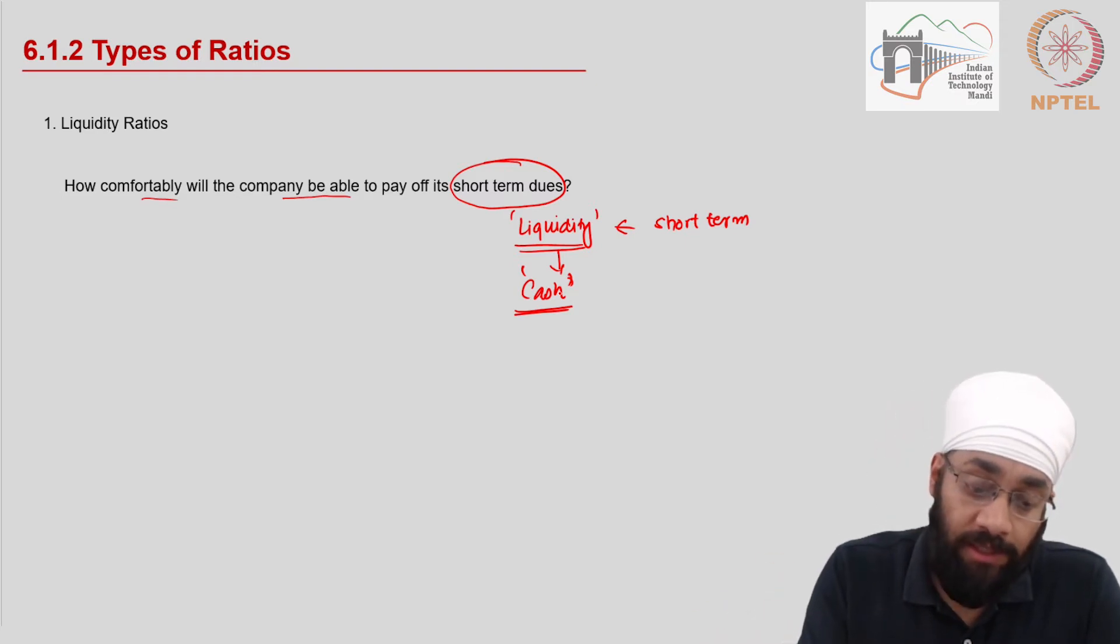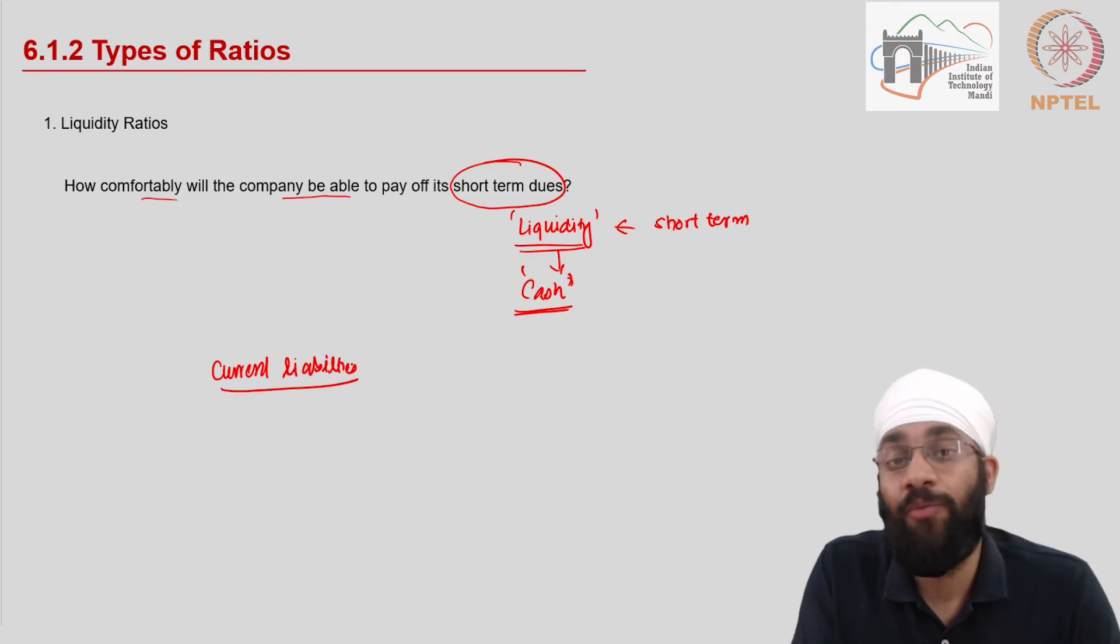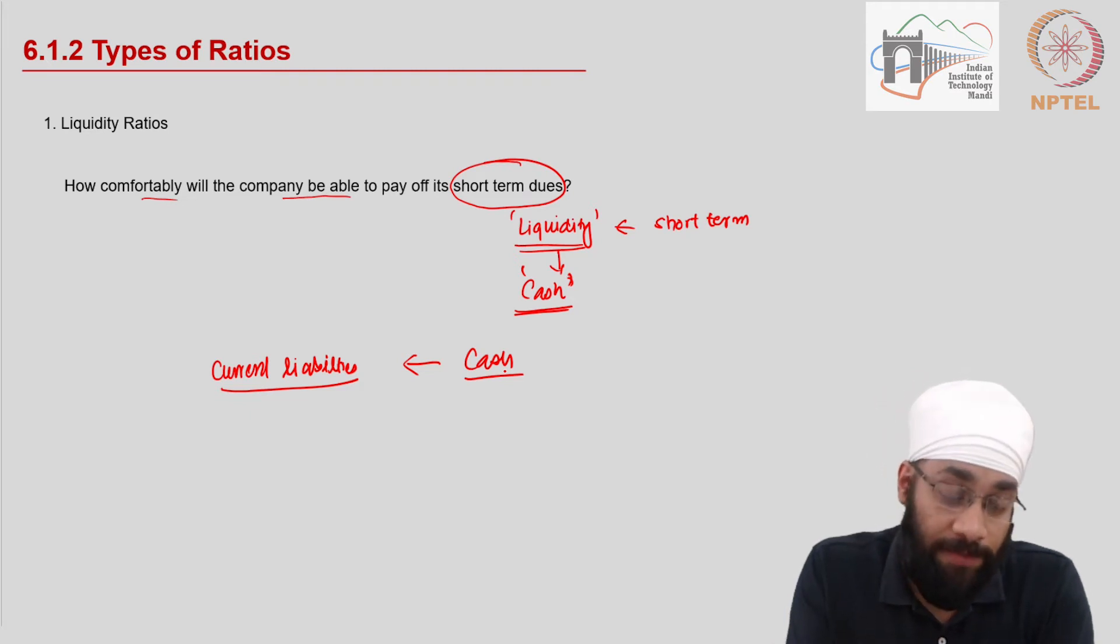The ability of the company to have the cash when it is required and the timeframe for this is shorter. In the short run, who do you need to pay to? In the short run, you need to pay to your current liabilities, the people to whom the current liabilities are due. So these current liabilities need to be paid off and you need sufficient cash. This is a kind of analysis where we will look at related terms to say whether a business is going to easily meet its short term liabilities or not.